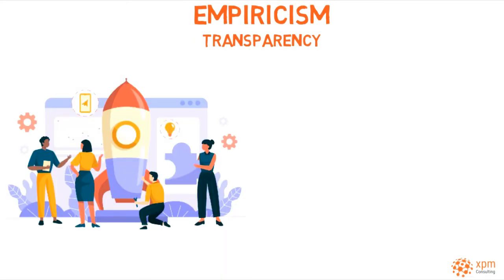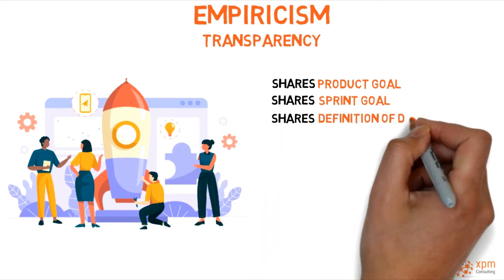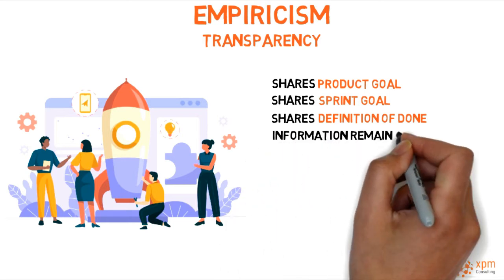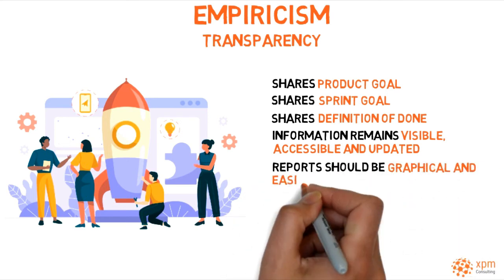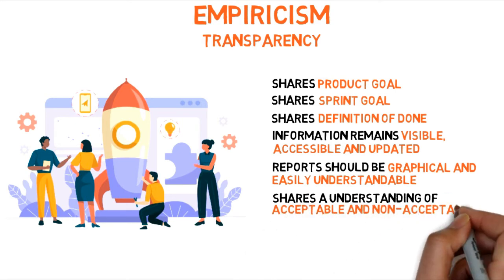The following practices promote transparency. The Scrum team shares a common product goal to ensure that the reason for completing the product and product progress are transparent. It also shares a common sprint goal to ensure that the reasons for completing the sprint and sprint progress are transparent, and shares a common definition of done to ensure that product quality is transparent. Relevant information remains visible, accessible and constantly updated. Reports should be graphical and easily understandable. Finally, the Scrum team shares a common understanding of acceptable and non-acceptable behaviors.